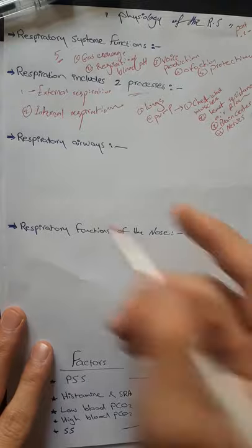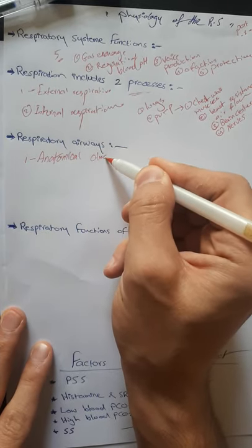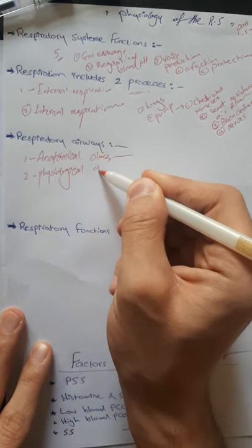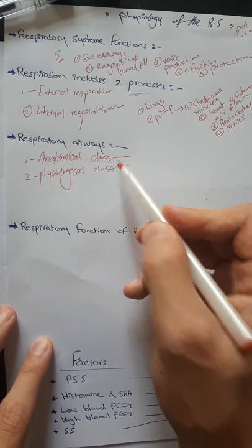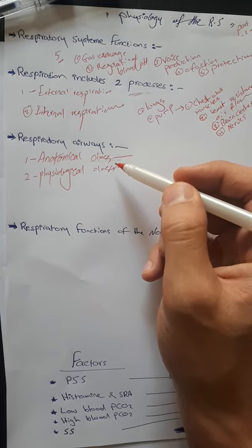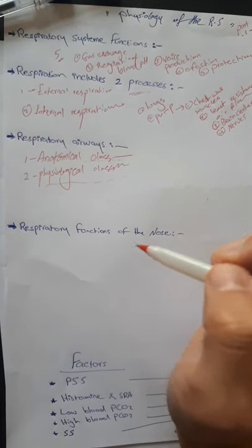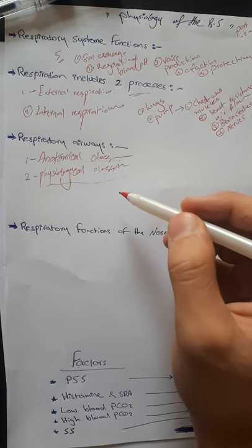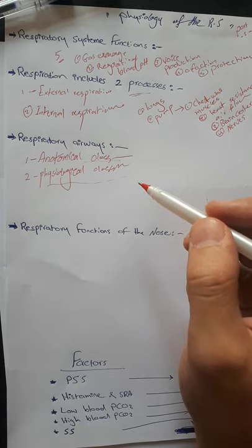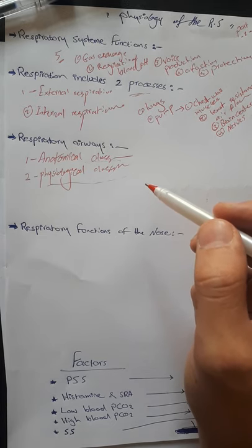In the respiratory airways we have anatomical classification and physiological classification. Anatomically: nose, pharynx (upper respiratory tract), larynx, trachea, bronchi, bronchioles, terminal bronchioles, respiratory bronchioles, alveolar ducts, alveolar sacs, and alveoli (lower respiratory tract). Physiologically: the conducting zone includes nose through terminal bronchioles, dividing 16 times; the respiratory zone includes respiratory bronchioles, alveolar ducts, alveolar sacs, and alveoli, dividing 7 times.